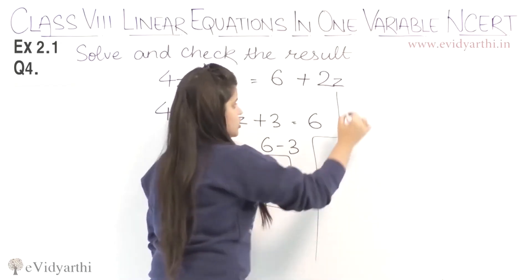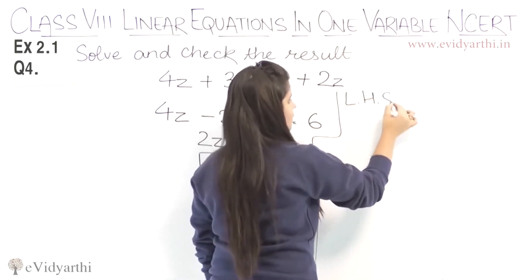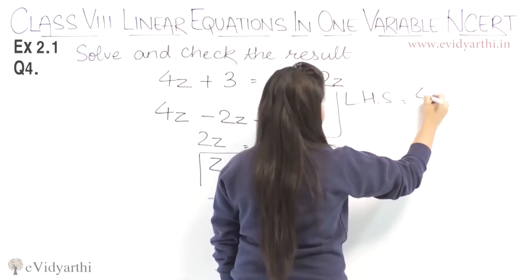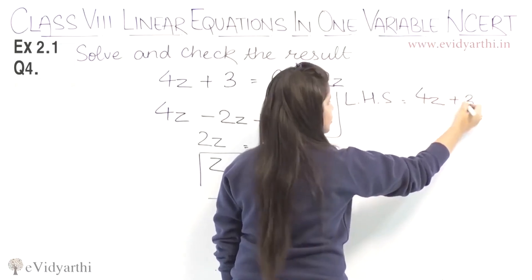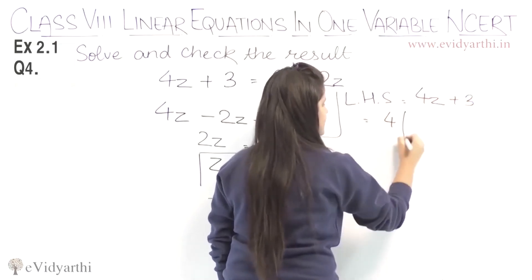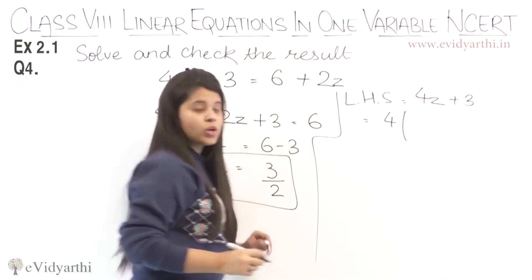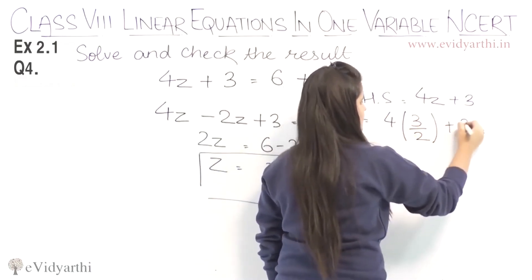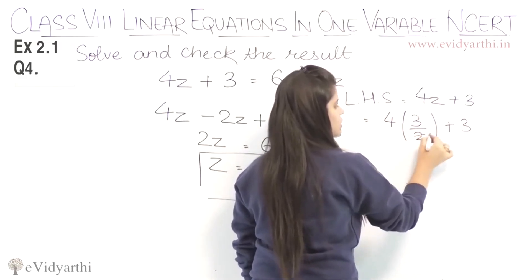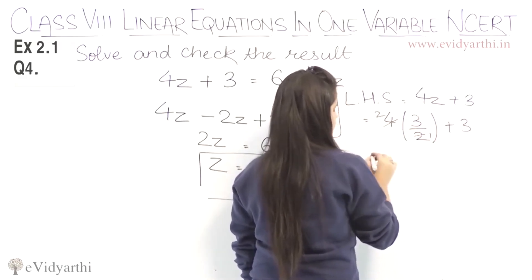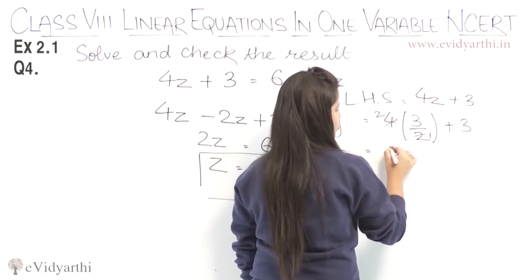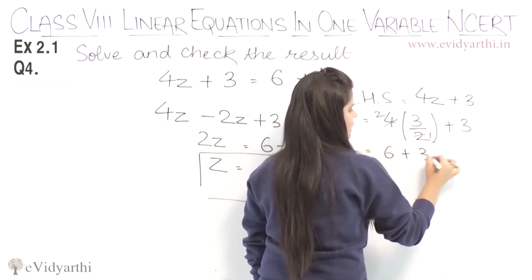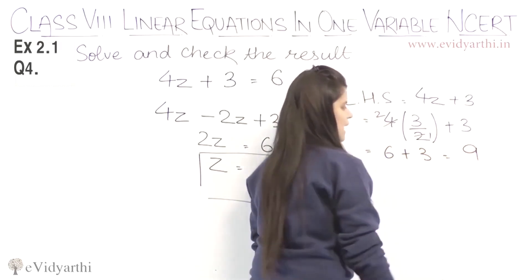Now let's verify by substituting in the equation, starting from the left-hand side. We have 4z plus 3. Putting z equals 3 upon 2, we get 4 times 3 upon 2 plus 3. 2 and 4 cancel to get 2, 2 threes are 6, plus 3 equals 9.